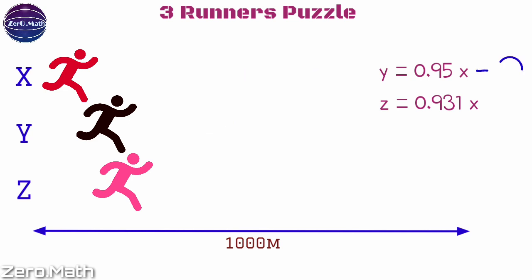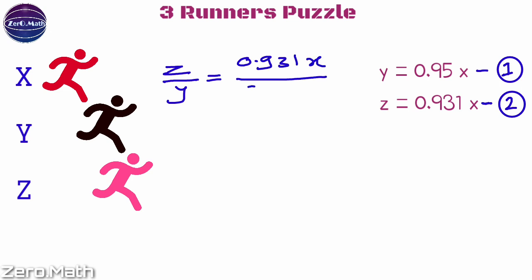Now let's solve equations 1 and 2 to find out the relation between Y and Z. Let's divide equation 2 by equation 1. We will get z/y = (0.931x)/(0.95x). Let's cancel out x from the numerator as well as denominator.